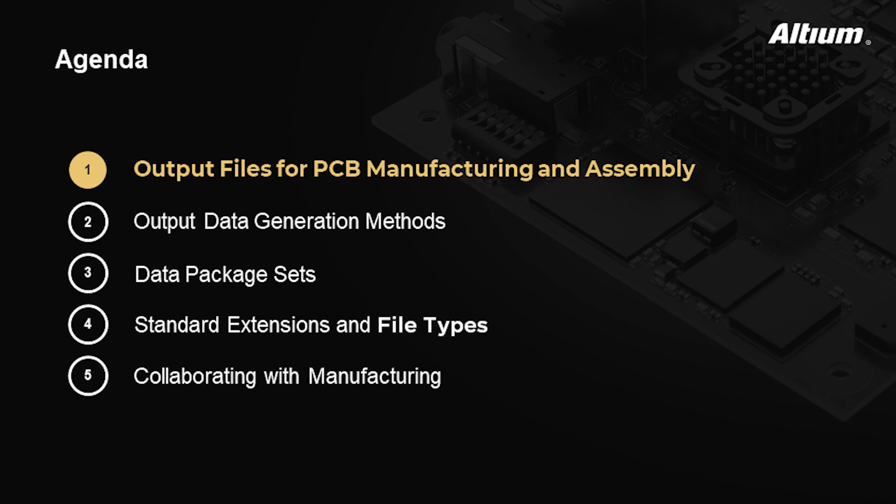We're going to get started today by discussing the different output files required for PCB manufacturing and assembly. We will then move on to discussing the methods for data generation and the different data package sets. Once we have discussed the different data package sets, we'll discuss the standard extensions and file types found in those data packages. Lastly, we will discuss what is necessary to collaborate with manufacturing and how Altium 365 can enable you to share and collaborate on your designs.